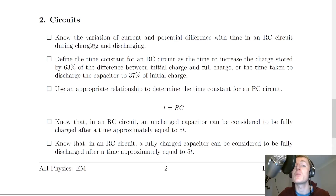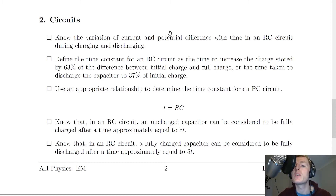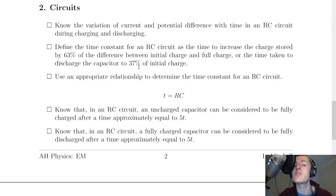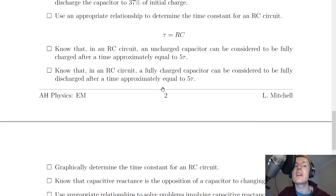We're now on to section two: circuits. You need to know the variation of current and potential difference with time in an RC circuit during charging and discharging — these are graphs of voltage across a capacitor and current in the circuit against time. There is also a definition: the time constant for an RC circuit is the time to increase the charge stored by 63% of the difference between initial and full charge, or for a discharging capacitor, the time to discharge to 37% of initial charge. The time constant is given by τ equals RC.